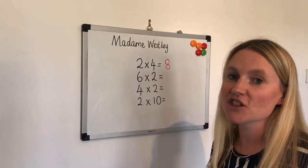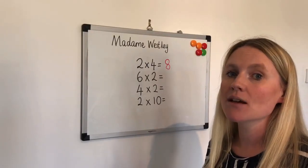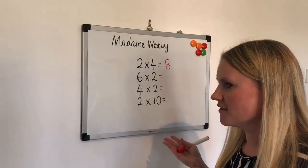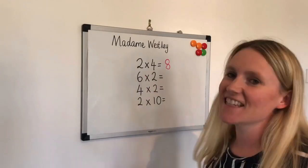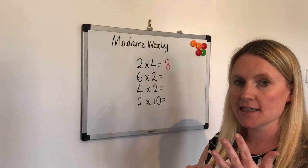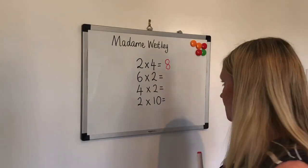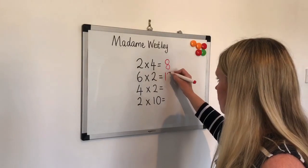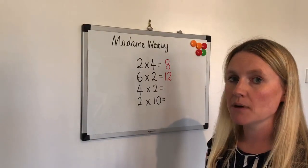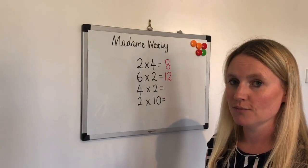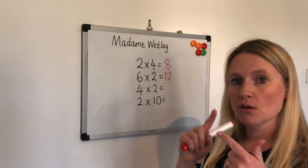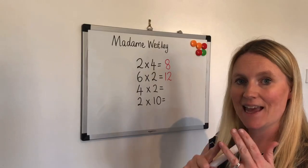Moving on to our next question: 6 multiplied by 2. How many times do we have to count in our twos? 6 times: 2, 4, 6, 8, 10, 12. Next: 4 multiplied by 2. This time we're going to count in twos four times: 2, 4, 6, 8.